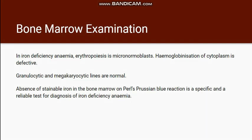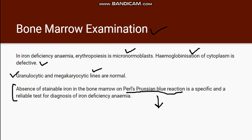We rarely require bone marrow examination in iron deficiency anemia, but the picture shows micronormoblasts — similar to microcytic cells in the peripheral blood film. Hemoglobinization of the cytoplasm is defective because there is decreased hemoglobin formation. However, WBCs and platelets are normal; the granulocytic series and the megakaryocytic series are normal. There is also a stain known as Pearl Prussian blue stain done to check iron in the bone marrow slide, and there is absence of stainable iron in this case — it is a very useful test for iron deficiency anemia.